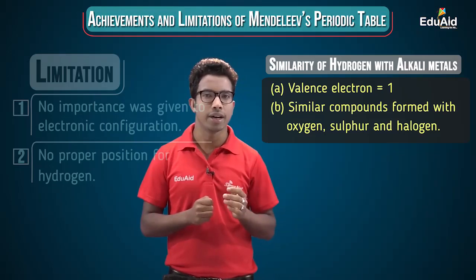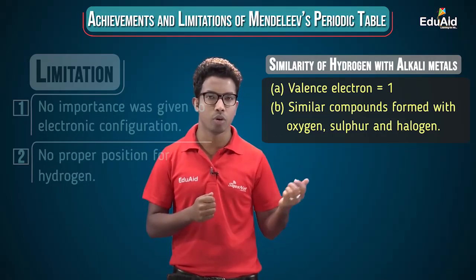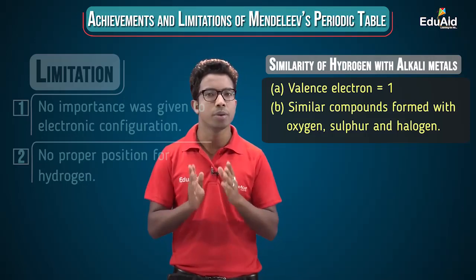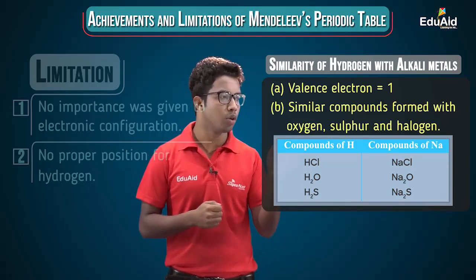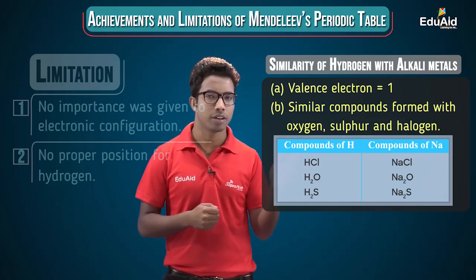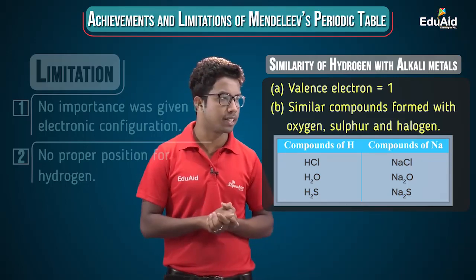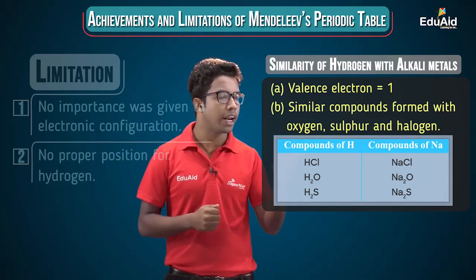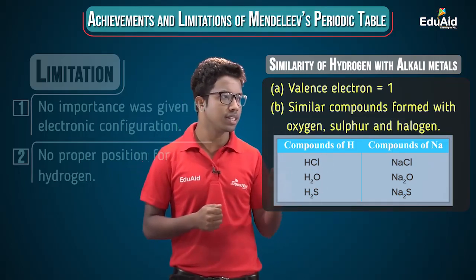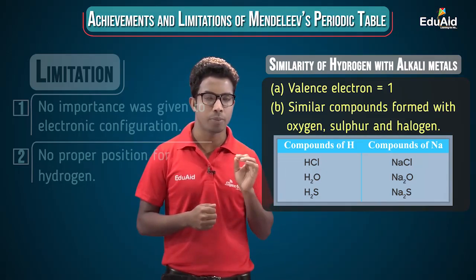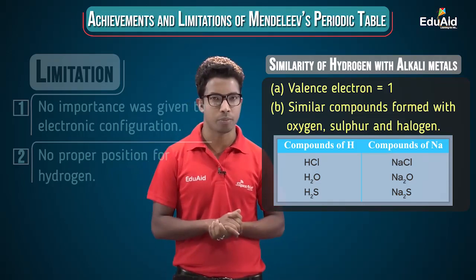Another similarity: like alkali metals, hydrogen also forms similar compounds with oxygen, sulfur, and halogens. For example, sodium forms NaCl with chlorine, and hydrogen forms HCl — the formula is similar. Sodium forms Na₂O and hydrogen forms H₂O; sodium forms Na₂S and hydrogen forms H₂S. From this comparison, we can see that both sodium and hydrogen form similar kinds of compounds.